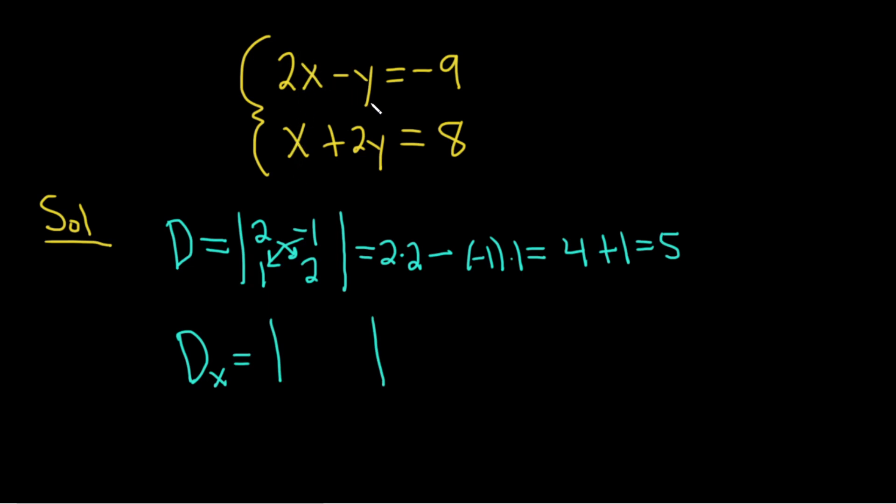and you basically take these and you replace them. So it'll be negative 9 and 8. And then you keep the y's, so negative 1 and 2. Again, for Big D sub x, you just look at the x's and you replace them with these numbers here in your matrix, and then you keep the y's.